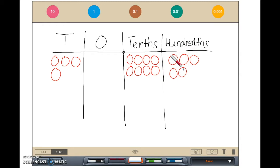Next, I am going to use green circles to represent fifteen dollars and fourteen cents. I am going to draw one green circle in the tens place, five green circles in the ones place, one green circle in the tenths place, and four green circles in the hundredths place.